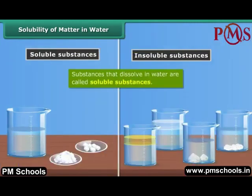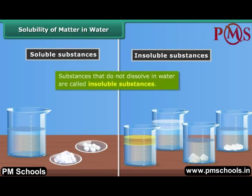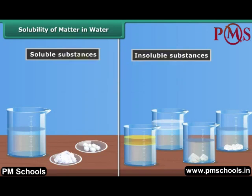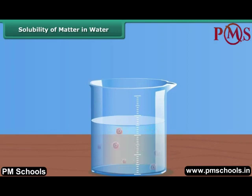Substances that dissolve easily in water are called soluble substances. Substances that do not dissolve in water are called insoluble substances. Some gases are also soluble in water, such as oxygen. Oxygen dissolved in water helps aquatic animals survive.